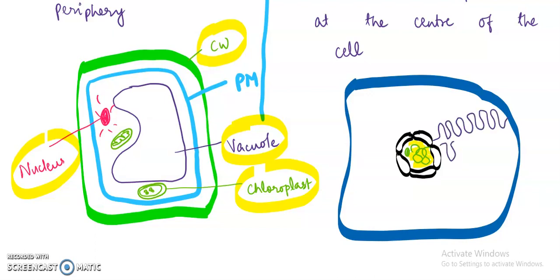Now this is endoplasmic reticulum. And this is rough endoplasmic reticulum. So this is RER and another side you can also make SER. SER is always the smooth endoplasmic reticulum.